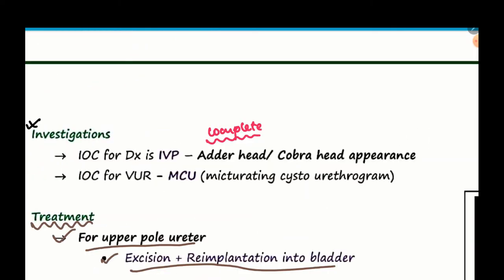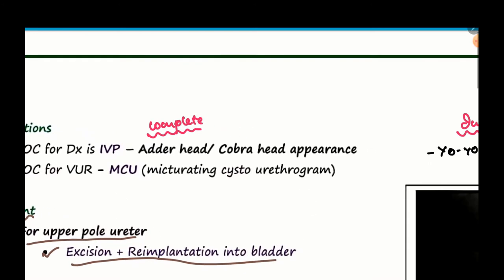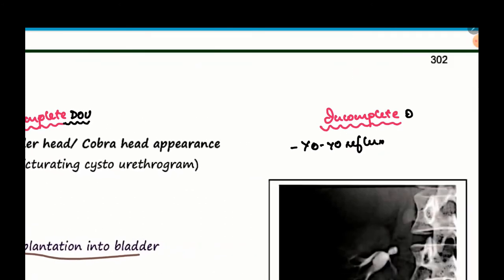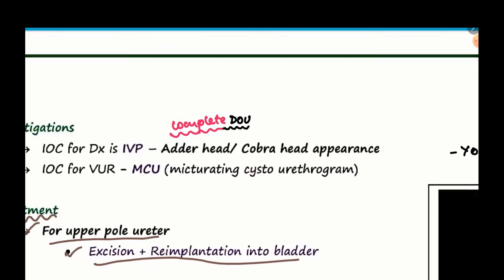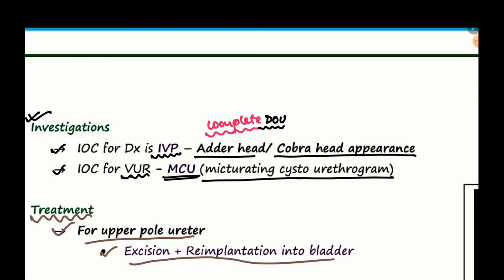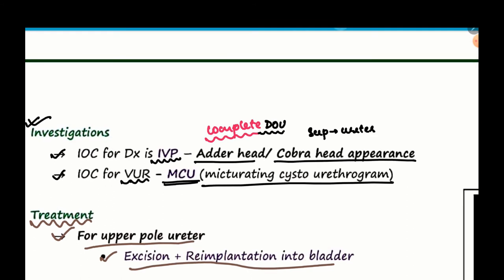Our next topic is investigations, divided into two parts: for complete and incomplete DOU. For complete DOU, the upper pole ureter has obstruction due to ureterocele — on IVP, this gives an adder head or cobra head appearance. The investigation of choice for VUR is MCU, micturating cystourethrogram. The diagnosis of choice for ureterocele is the cobra head appearance on IVP; for VUR it is MCU.